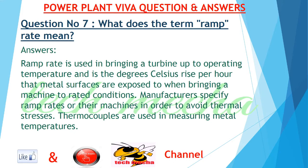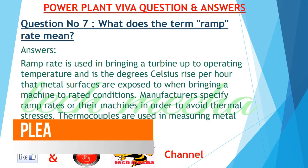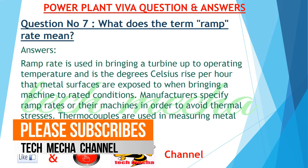Question number 7: What does the term ramp rate mean? Answer: Ramp rate is used in bringing a turbine up to operating temperature, and is the degrees Celsius rise per hour that metal surfaces are exposed to when bringing a machine to rated conditions. Manufacturers specify ramp rates for their machines in order to avoid thermal stresses. Thermocouples are used in measuring metal temperatures.